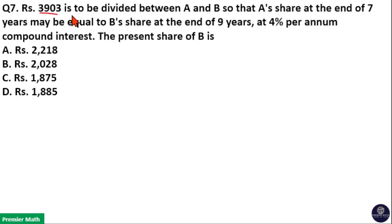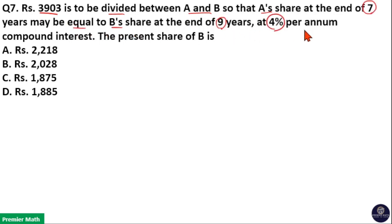Rs. 3,903 is to be divided between A and B so that A's share at the end of 7 years may be equal to B's share at the end of 9 years at 4% per annum compound interest.